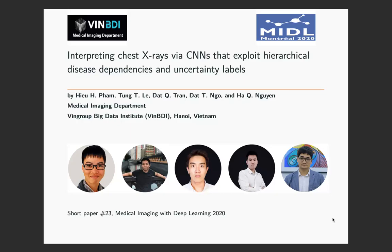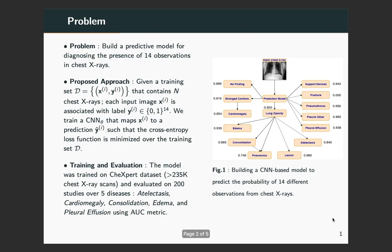Classifying lung disease from chest X-rays is a difficult task even for radiologists. We show in this study the important role of disease dependencies and uncertainty labels for training a deep learning system to classify chest X-ray images.